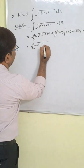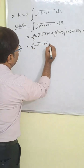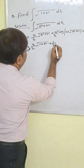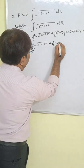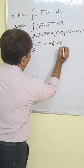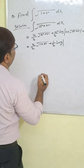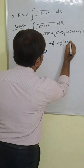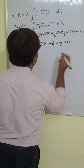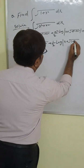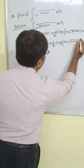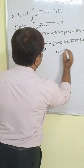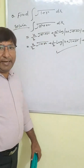So a is 1. We write x by 2 times root under 1 plus x square, then a square by 2 is simply 1 by 2, and then log of x plus root under 1 plus x square, plus C. This is our correct answer.